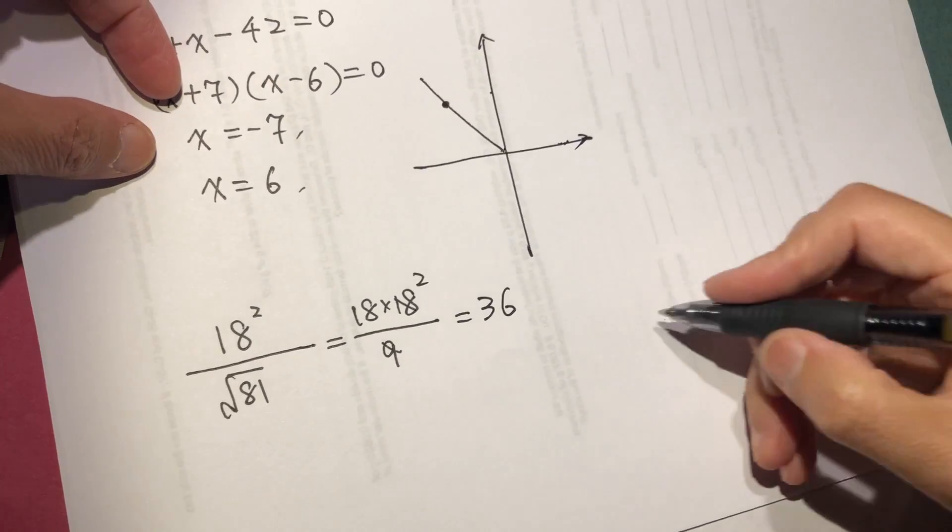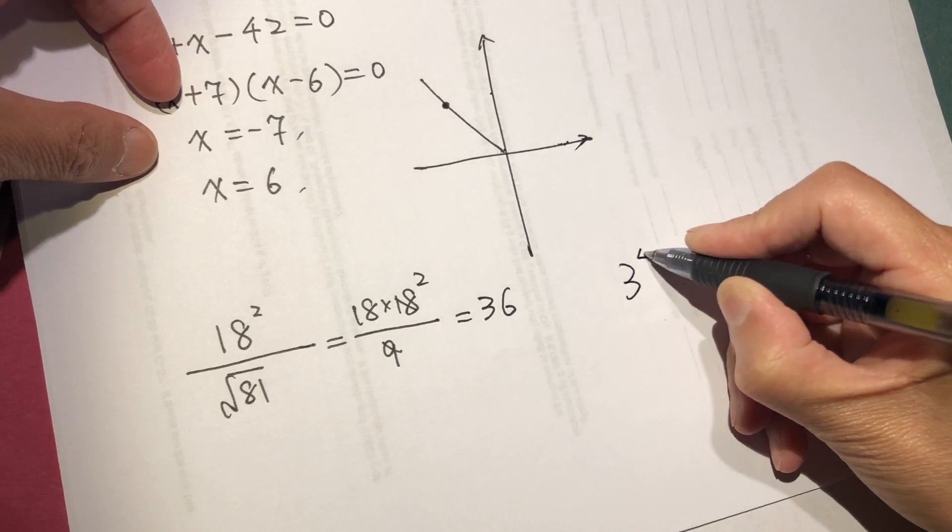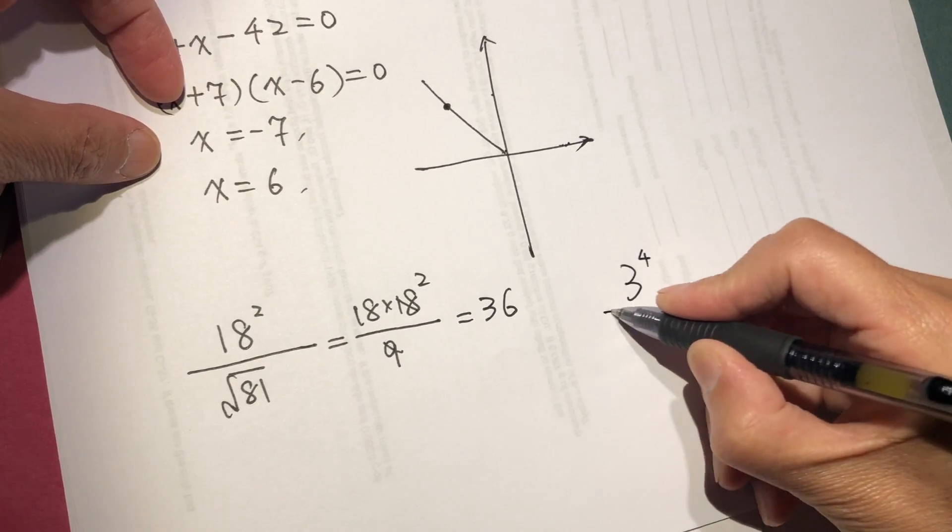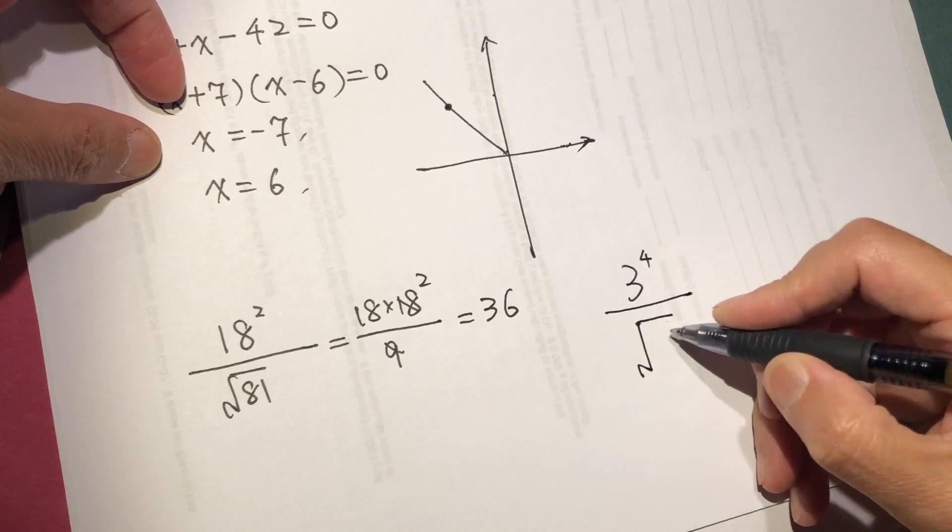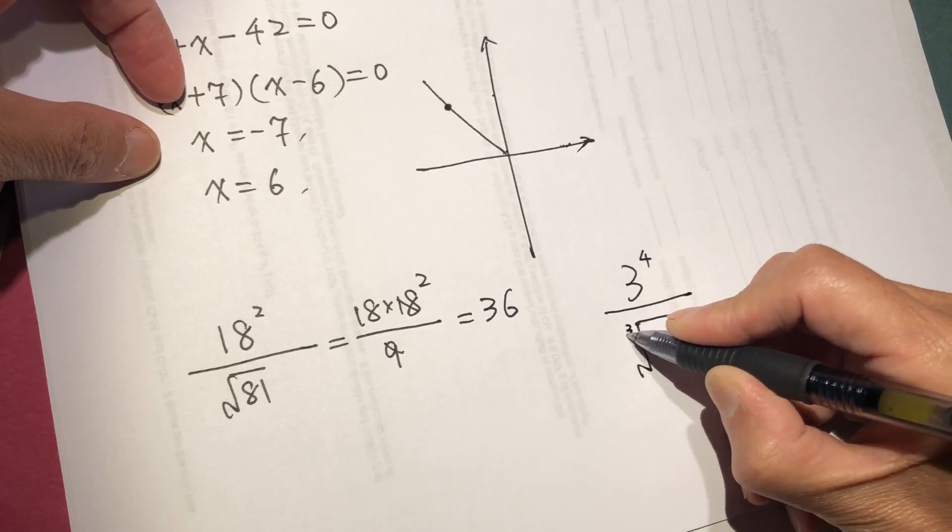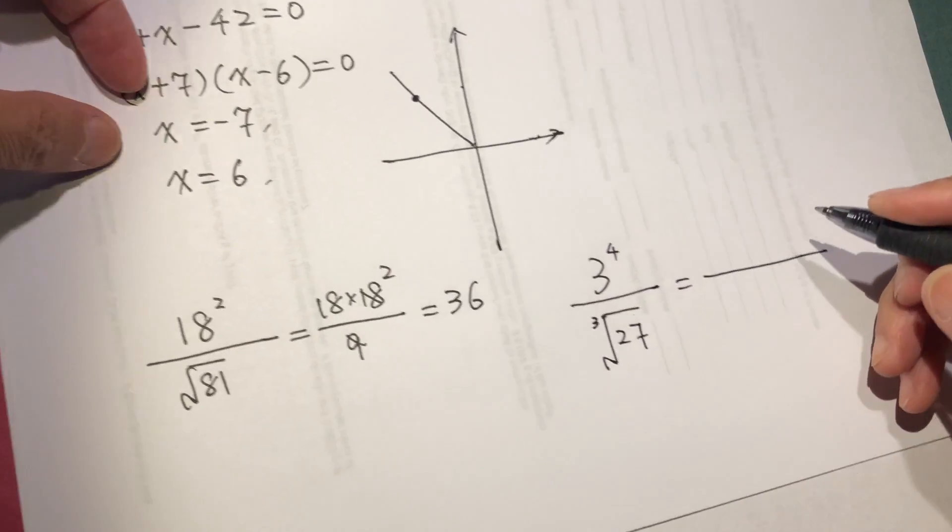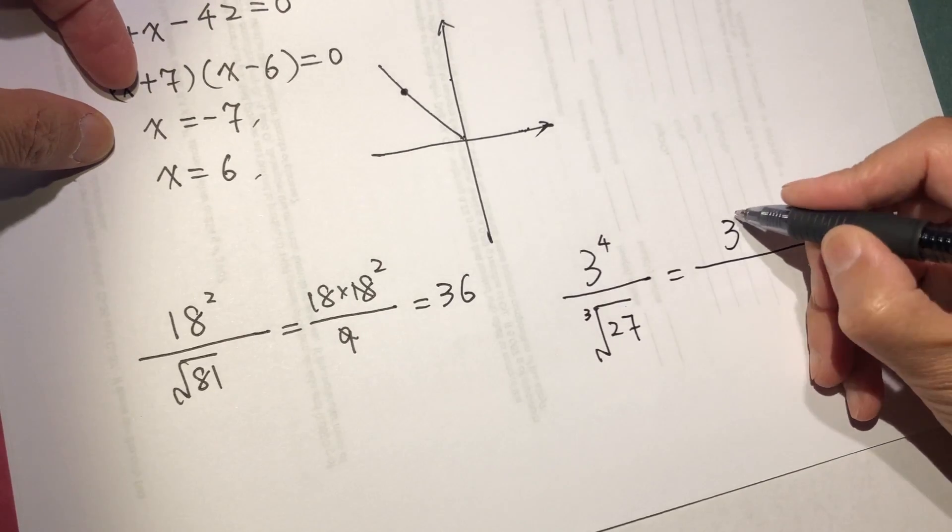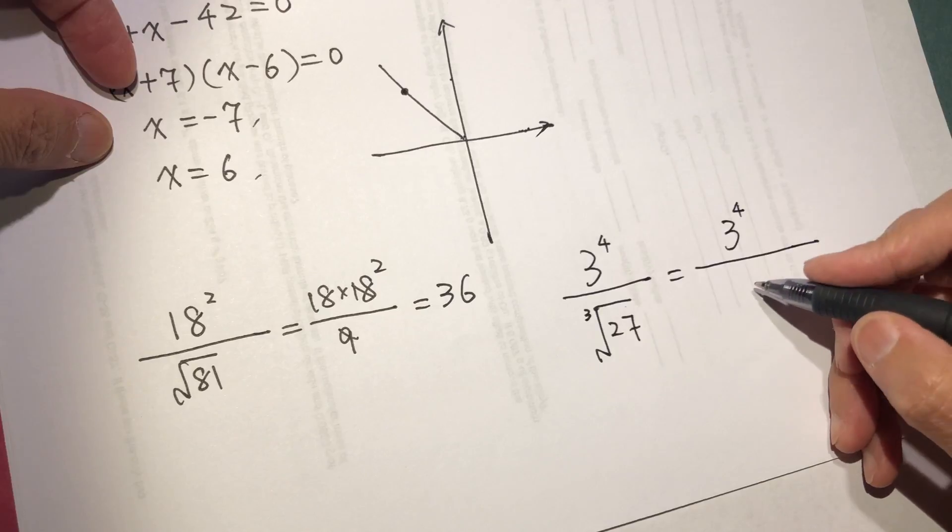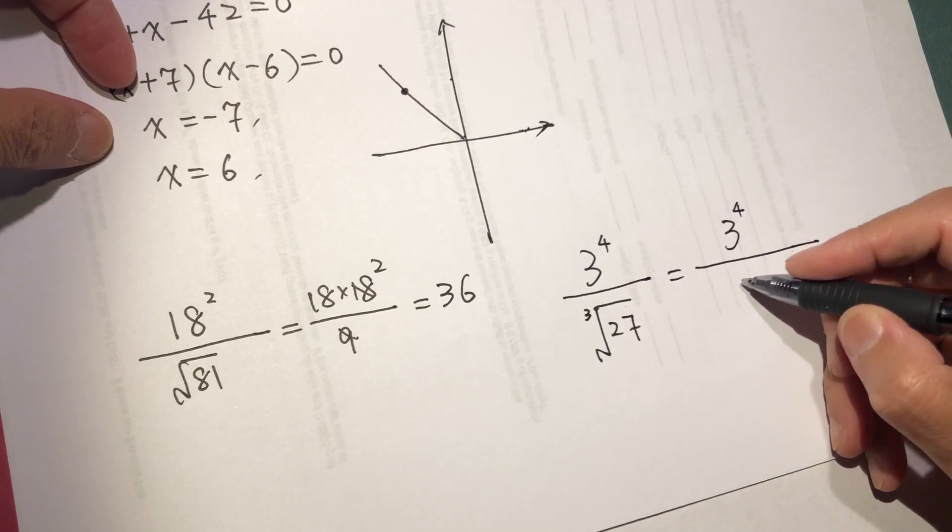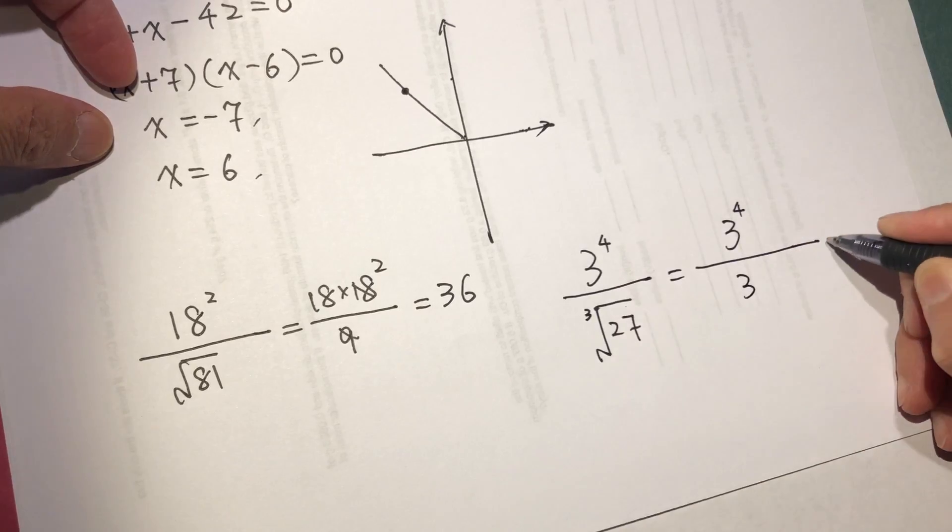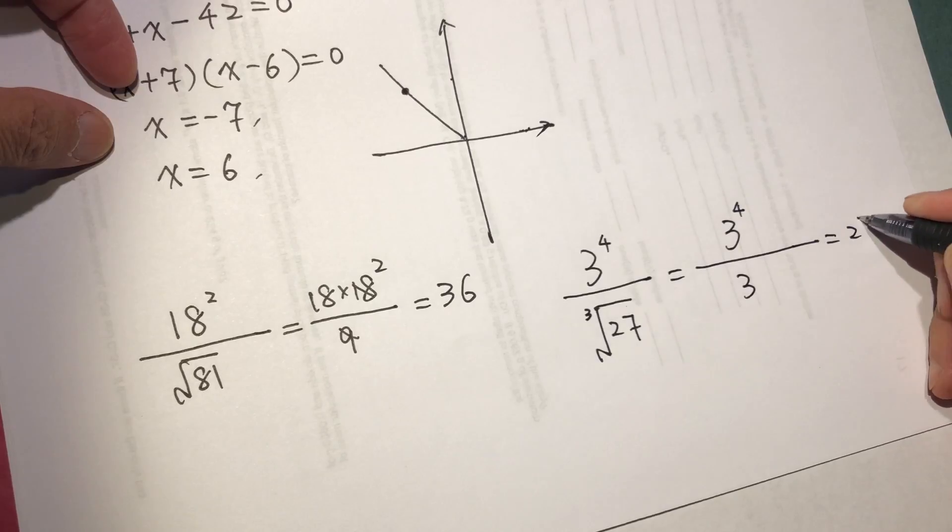Okay, 3 to the power of 4 divided by cube root of 27 equal to 3 to the power of 4 over 3, which is 27.